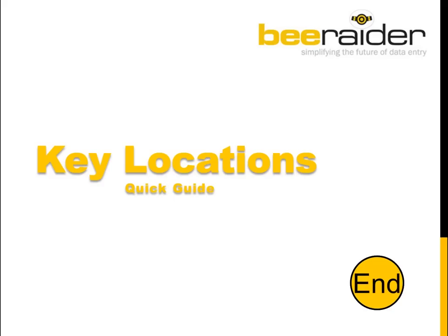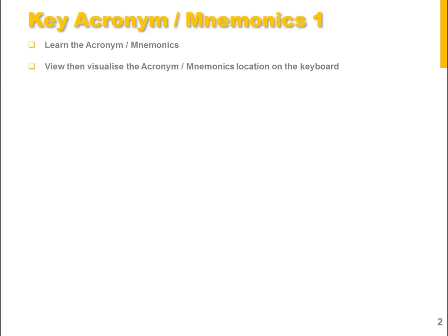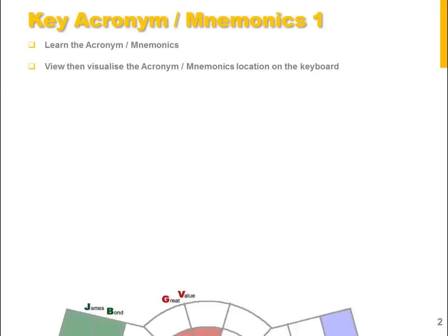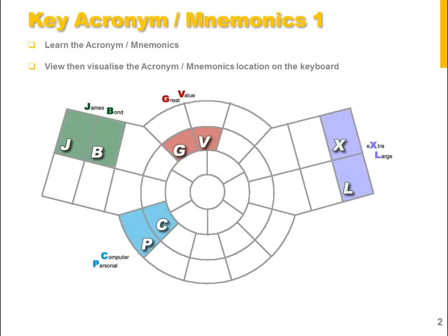Now we can begin. The first group of letters are a set of four acronyms and mnemonics. What I would like you to do is just learn the acronyms and mnemonics associated with each of the letters, then visualize the acronyms and mnemonics' location on the keyboard. So moving from left to right across the keyboard we have JB — James Bond, PC —